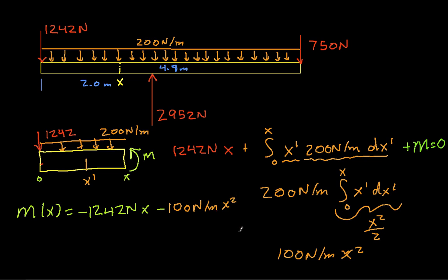That gives the expression for the bending moment as a function of X, as long as X is between zero and two meters. Notice that the X squared term means this is going to have a parabolic shape — it's going to be a chunk of a parabola.